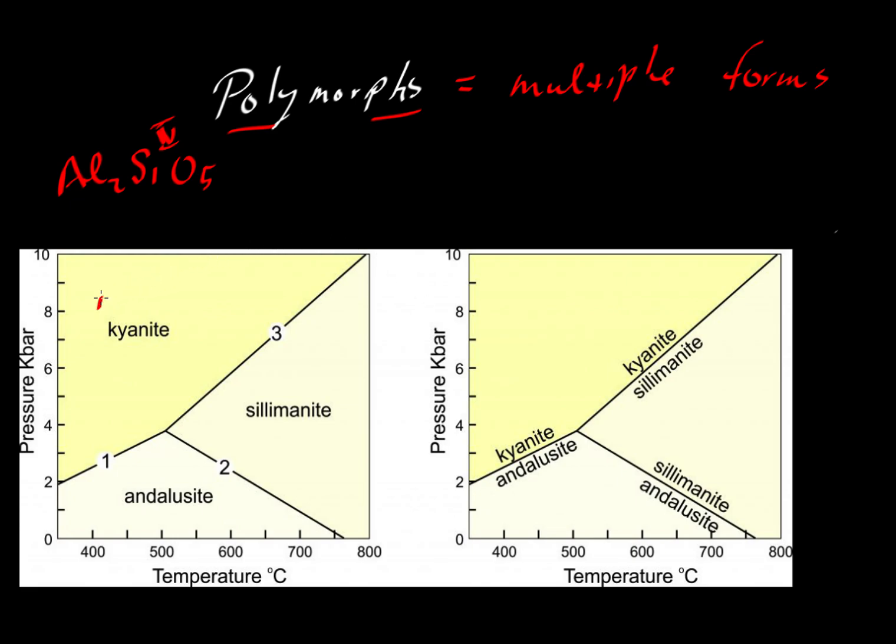One way we can illustrate that is by showing the coordination. For kyanite, all of the aluminum is in sixfold coordination. We can write aluminum with a Roman numeral VI above it, and that would be Al2SiO5.